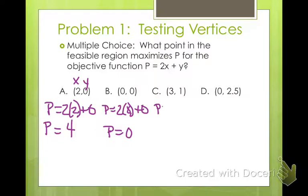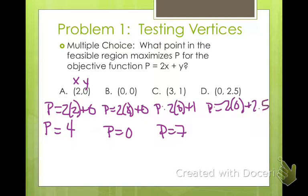(3, 1), P equals 2 times 3 plus 1. So that one, P equals 7. And this one, P equals 2 times 0 plus 2.5. So P is 2.5.